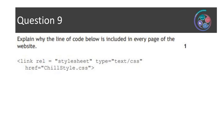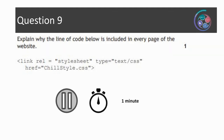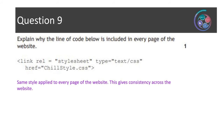Question nine asks: explain why the line of code below is included in every page of the website. The code is: link rel='stylesheet' type='text/css' href='chillstyle.css'. It's a one mark question. The reason we use this on every page of a website is to apply the stylesheet — particular styling to every web page on the website — because that gives consistency for the user experience across all the web pages.